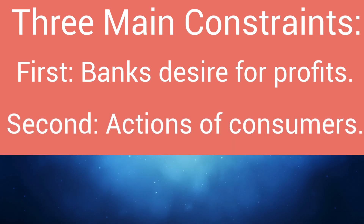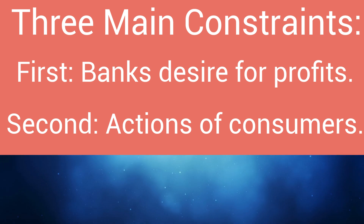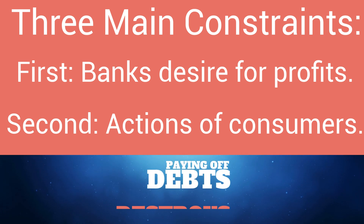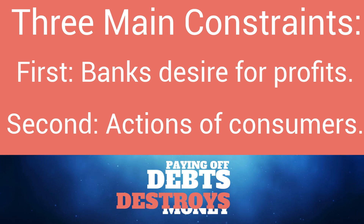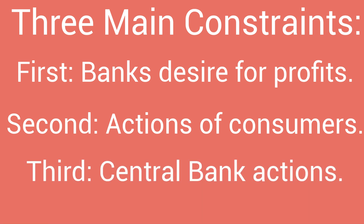Secondly, what consumers do with their money affects how much money there is in the economy. For example, if people decide to pay off debts, then the amount of money in the economy will decrease. And thirdly, a country's central bank can affect how both banks and consumers behave. They can do this by changing their central bank interest rates and through regulation of the banking industry.